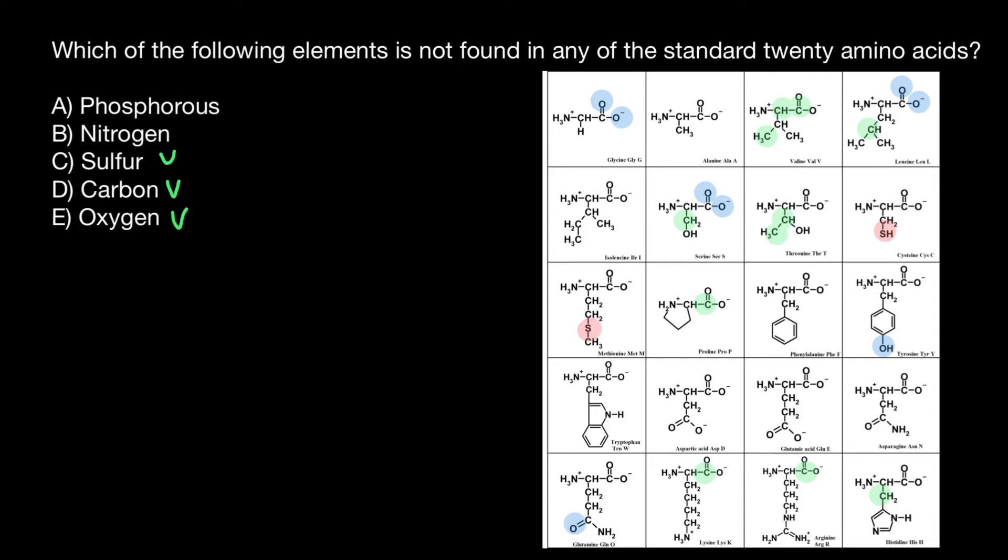What about nitrogen? Again, the name amino acids - amino means nitrogen. So we can find nitrogen in every single amino acid, in the backbone of each amino acid and in the R chain of some amino acids, for example here, here, and here.